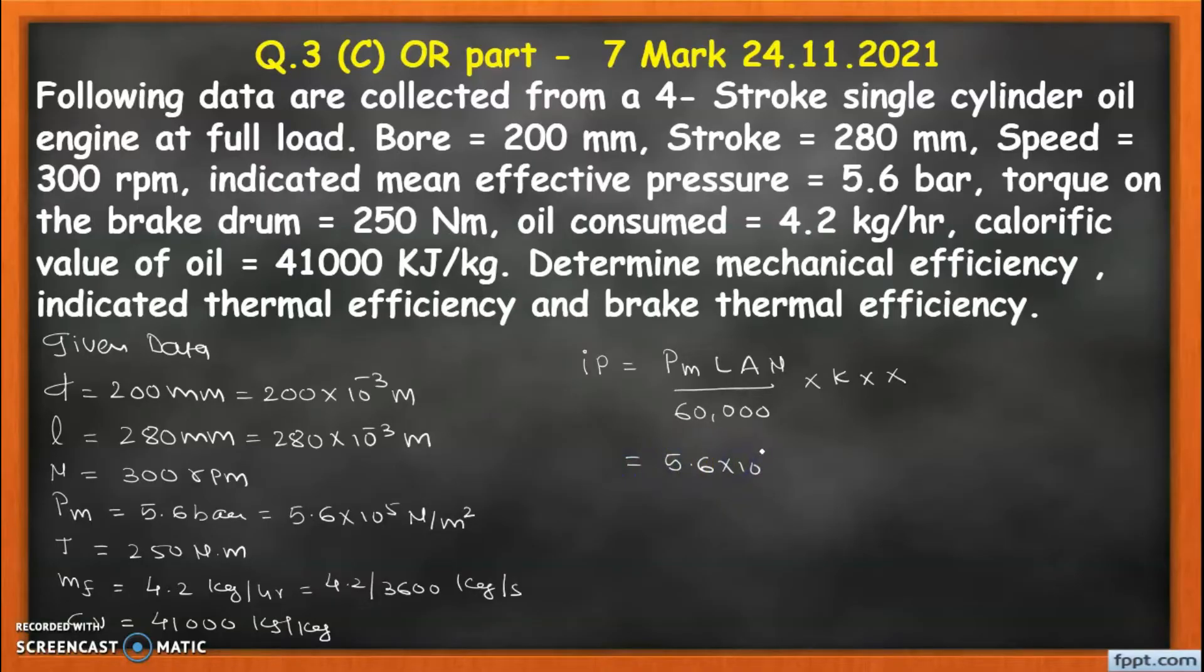So we just put down the value: mean effective pressure is 5.6 × 10^5, the length is 280 × 10^-3, area is π/4 × d², so d is 200 × 10^-3 whole square, into rpm is 300, the number of cylinders is 1, and x is 4-stroke so 1/2 is there, divided by 60,000.